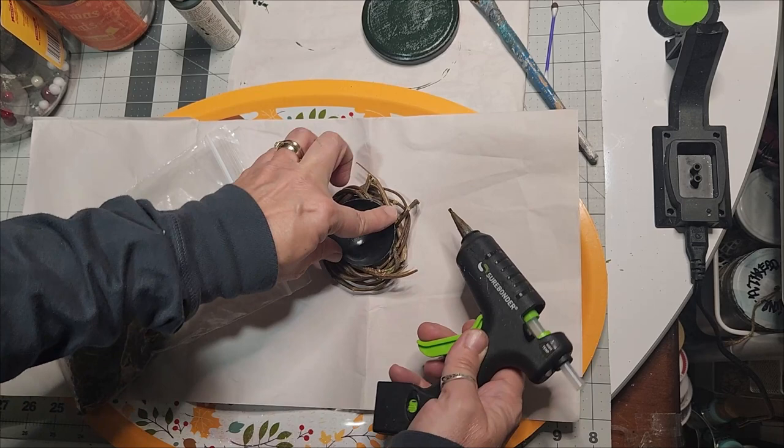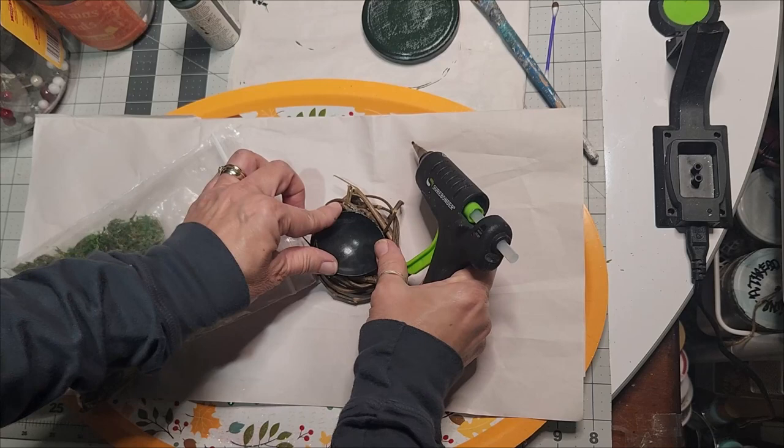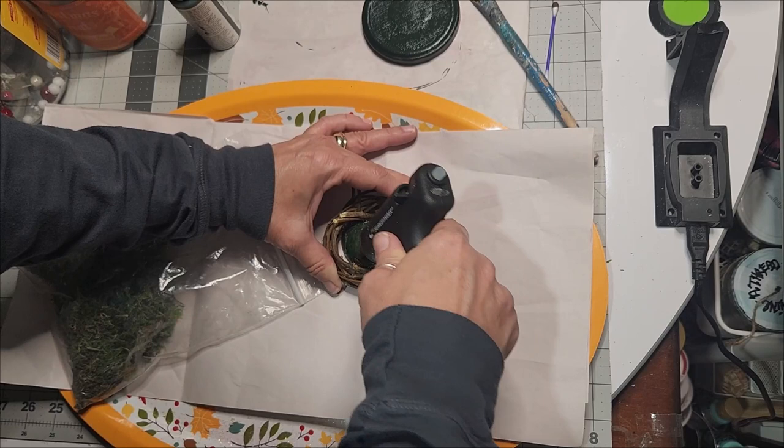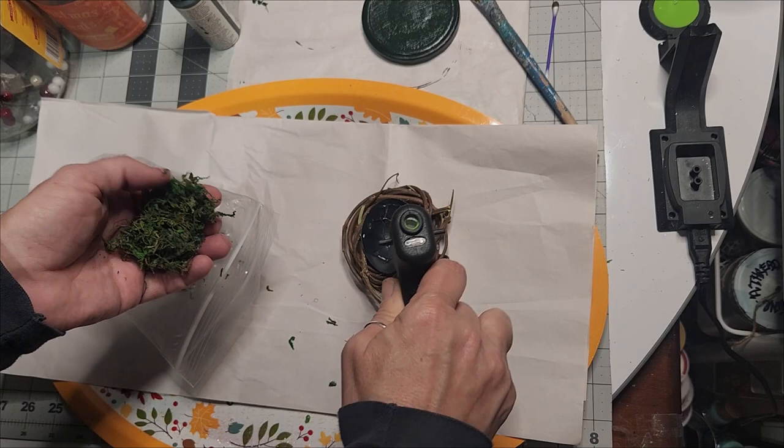Now I went outside and I snipped off a piece of my grapevine. And while it's still green, you can twist it and wrap it into a small wreath. And this little bottom side of an ornament fits perfect in there, just like a little nook.